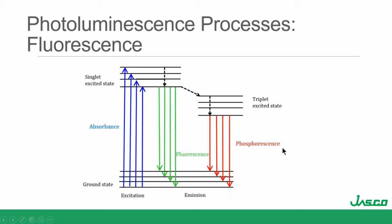There are other processes. If there's inter-system crossing — meaning the singlet excited state and triplet excited state have really good overlap of energy levels — the molecule can transition to the triplet state, lose some energy vibrationally down to the first level of the excited triplet state, and then give off photons down to vibrational levels of the ground state in the form of phosphorescence.